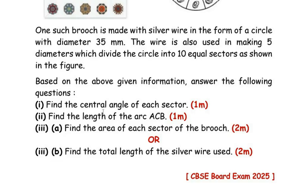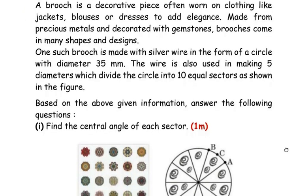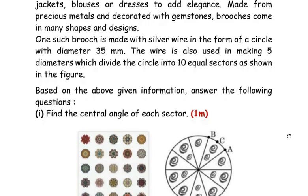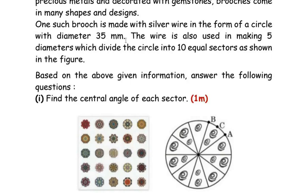Let us start with the first question. A brooch is a decorative piece often worn on clothing like jackets, blouses or dresses to add elegance. Made from precious metals and decorated with gemstones, brooches come in many shapes and designs. One such brooch is made with silver wire in the form of a circle with diameter 35 mm. The wire is also used in making 5 diameters which divide the circle into 10 equal sectors as shown in the figure. Based on the above information, answer the following questions.